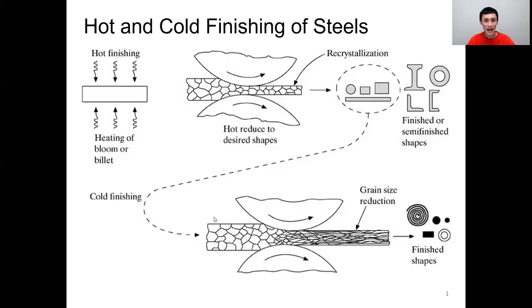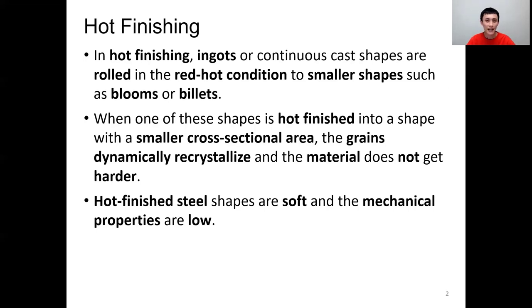If you form the material at room temperature, we call it cold finishing. The key difference is that for hot finishing, the grain size of the steel does not change because recrystallization keeps happening in the hot red condition. However, if we form the material at room temperature, the grain size will change and technically will be reduced. For hot finishing, the material is worked or rolled in the hot red condition to form smaller shapes like blooms or billets.